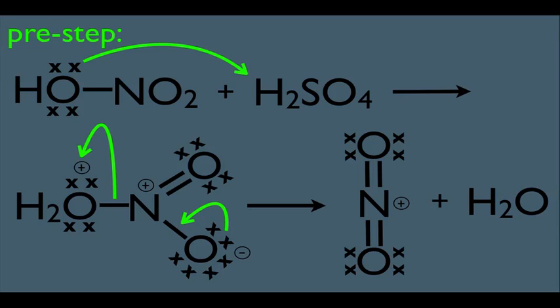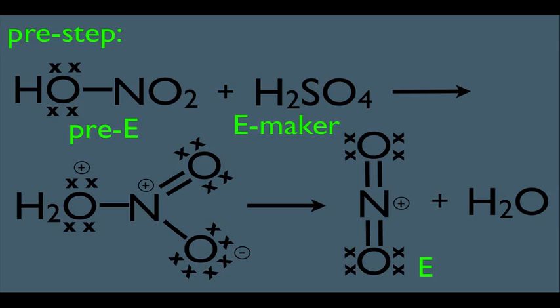Notice that NO2 molecule has a positive formal charge on the nitrogen, so he's a full-fledged electrophile now. So notice that's why the HNO3 is playing the role as the pre-electrophile, and the H2SO4 is playing the role as the electrophile maker.